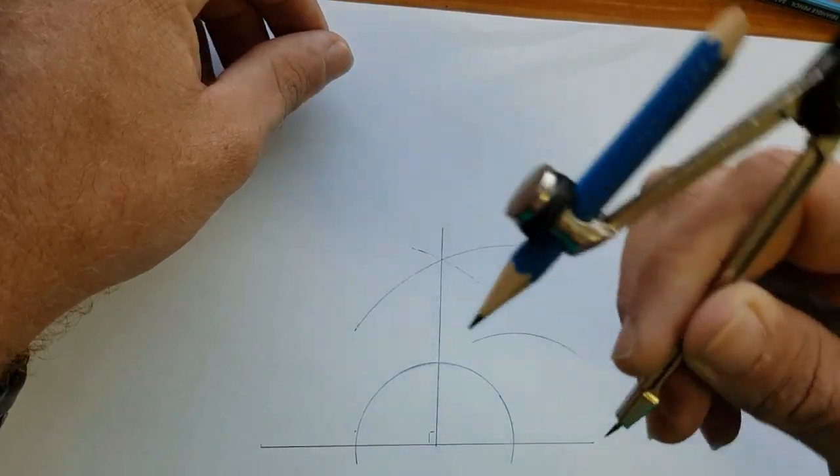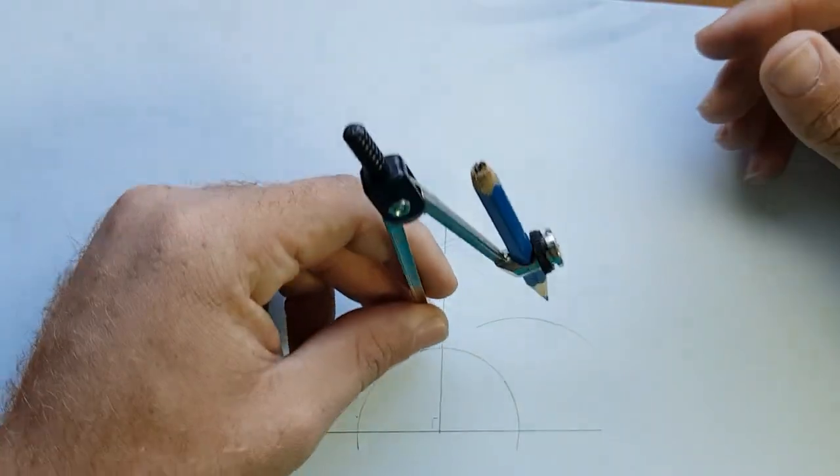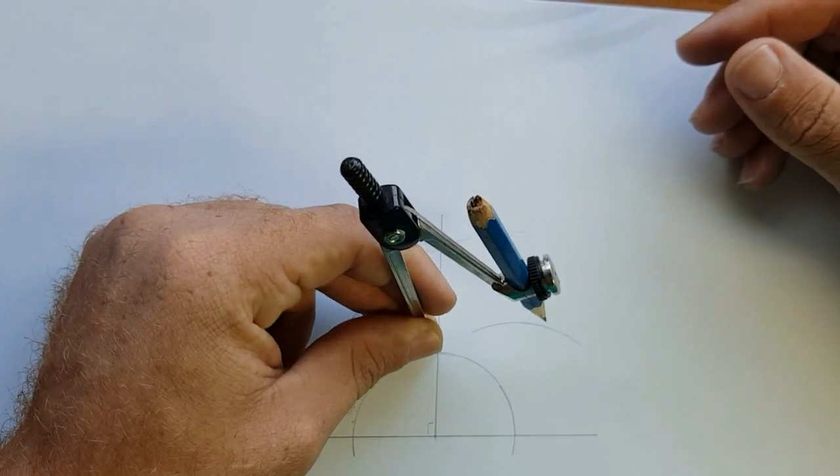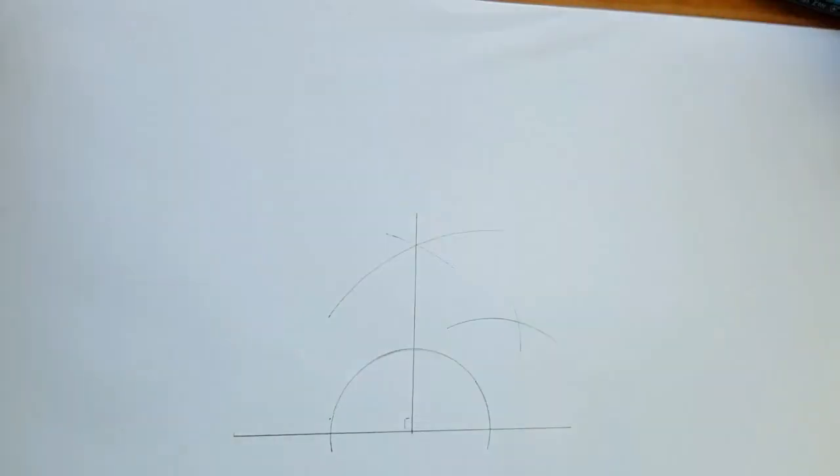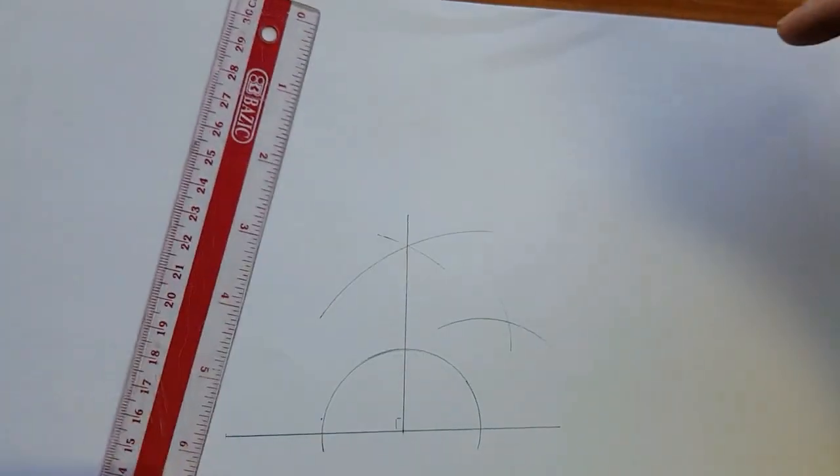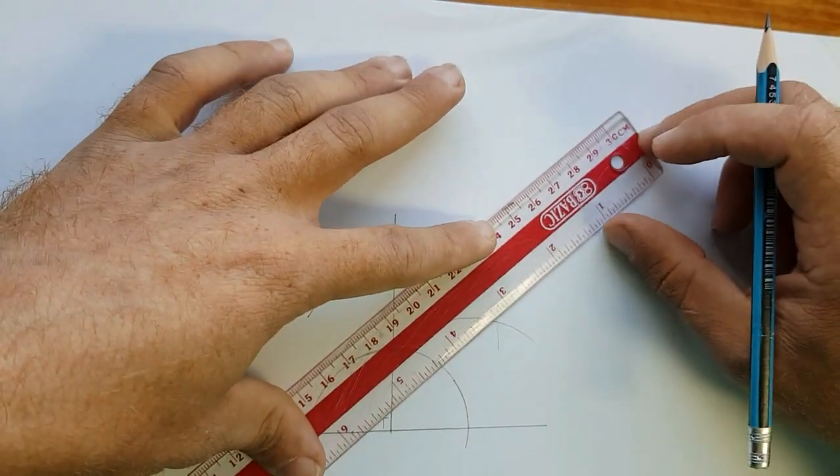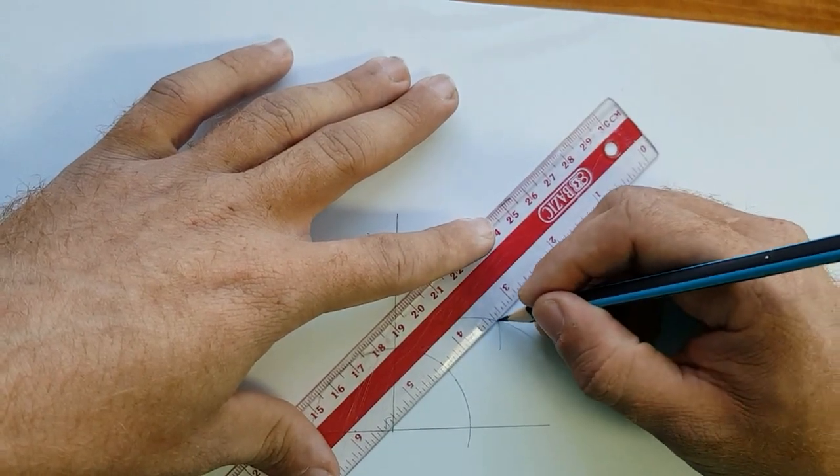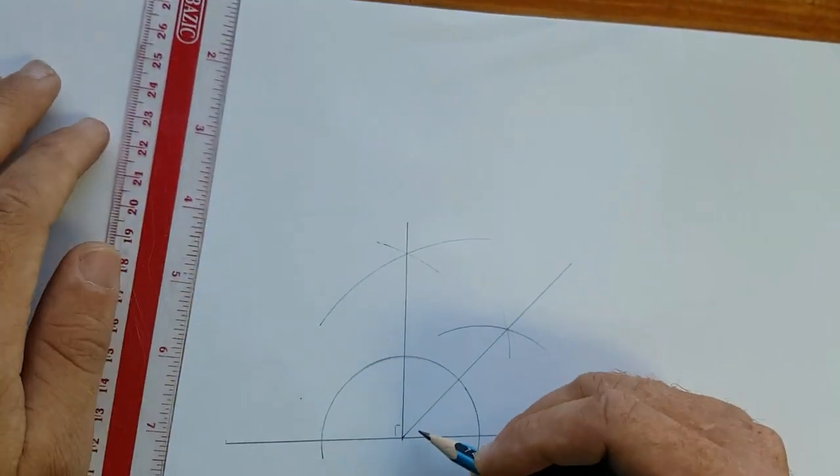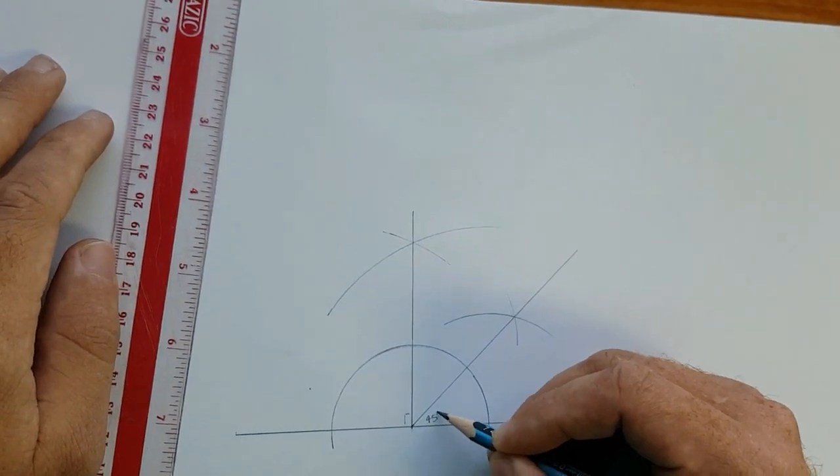And without changing the radius, where it cuts the 90 degree, we scribe another arc. Where those two arcs intersect, we connect them to our vertex. We now have our 45 degree angle.